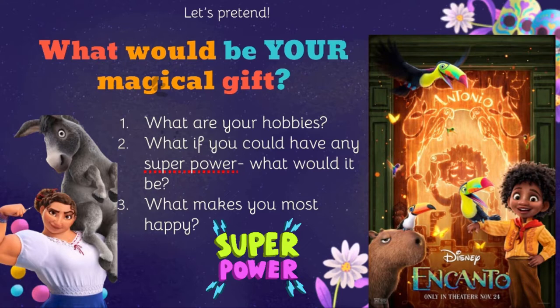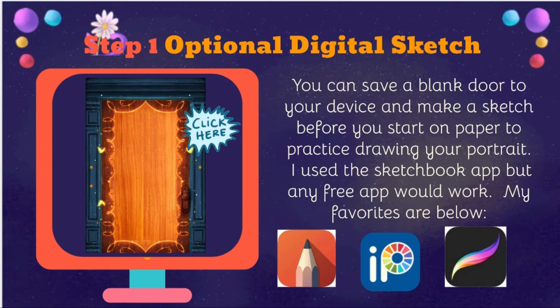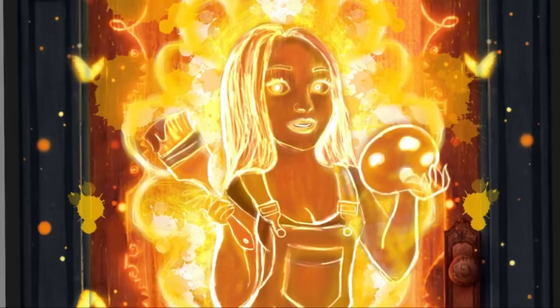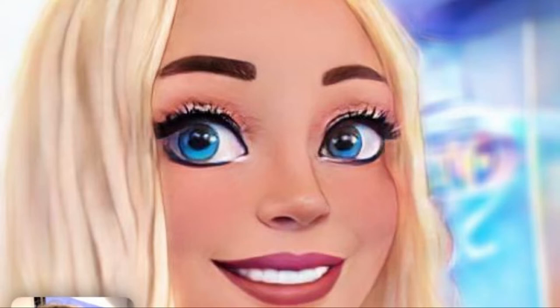Once you have decided on your gift, the next step is to start with a digital sketch. Now this is an optional step, but I will tell you that I love my digital sketch better than the one I actually did on paper. I made my digital sketch using Sketchbook, and of course my superpower had to be art — if I could draw anything and make it come to life, that would be my power.